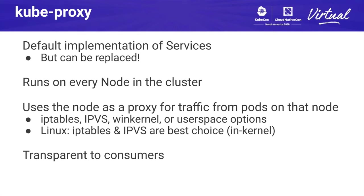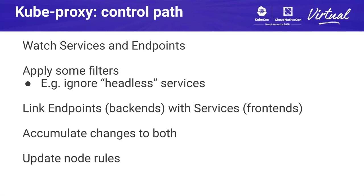The key to kube proxy is that it's transparent to the consumers — anyone accessing the service VIP won't have to be aware of the kube proxy in between. On the control path, kube proxy mainly watches services and endpoints. It applies some filters — for example, it ignores headless services — then links the endpoints (the backends, the selected pods) with services (the front ends, the virtual IPs). It accumulates changes to both and then updates the kernel state, which is the node-level proxy, on the node itself.